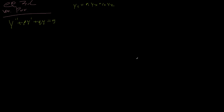What we're going to do is say our particular solution is going to be — the numbers here should have a 1 — essentially u1·y1 plus u2·y2, where u1 and u2 are parameters to be determined.